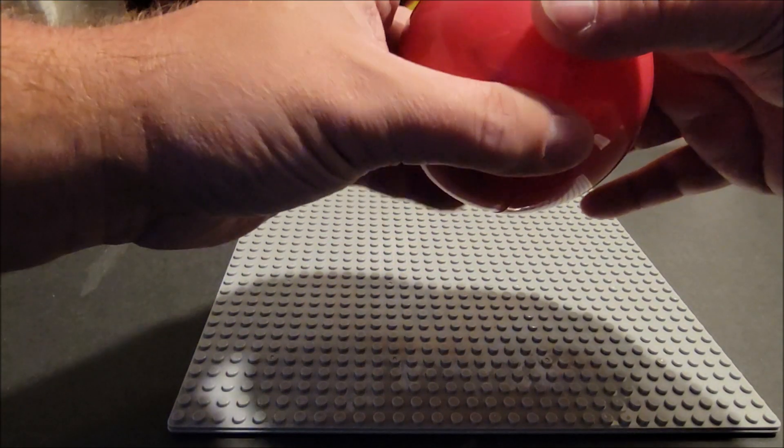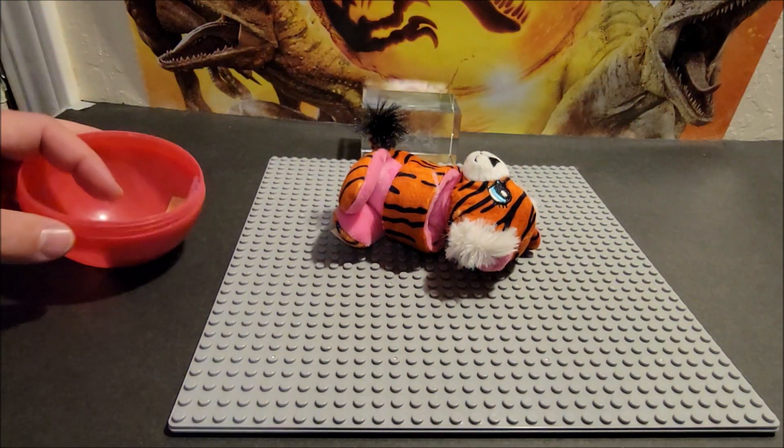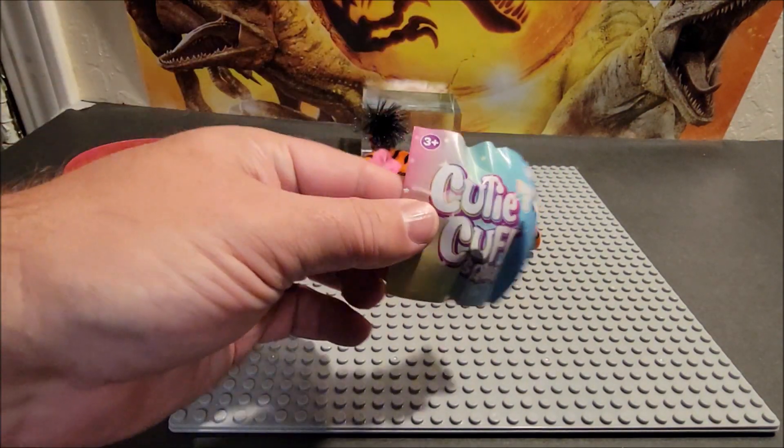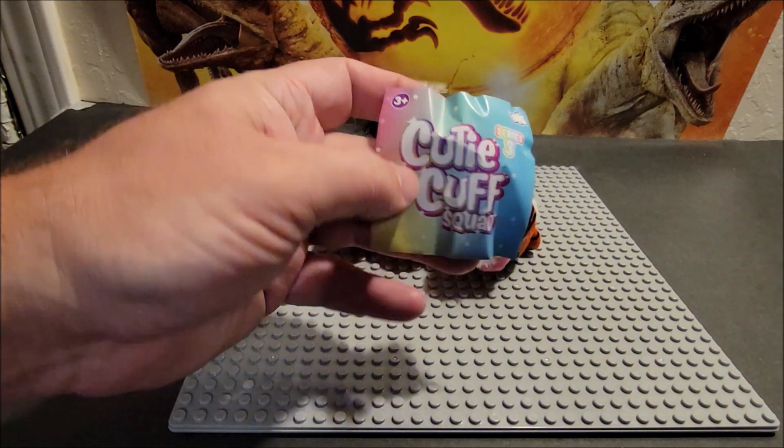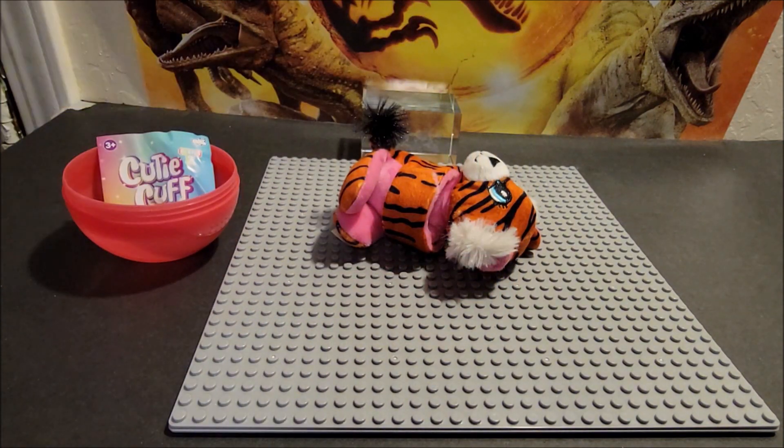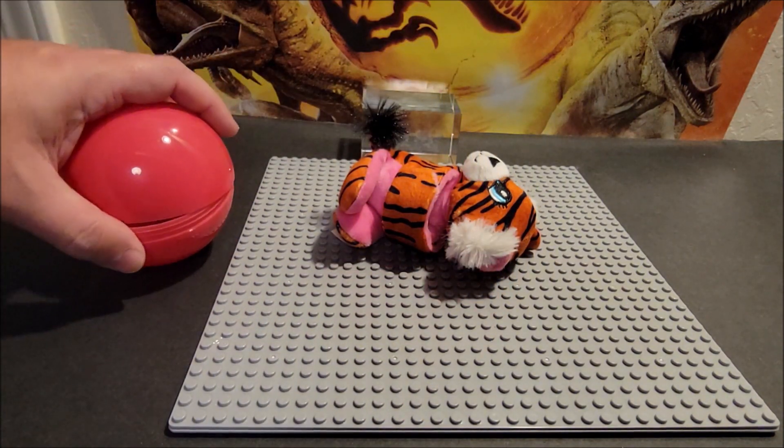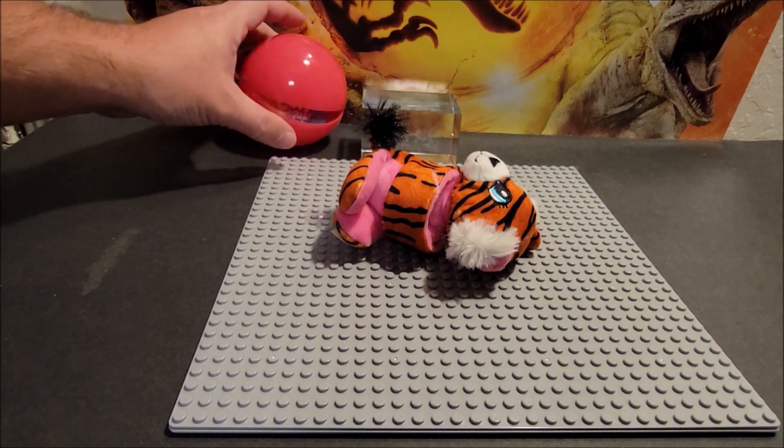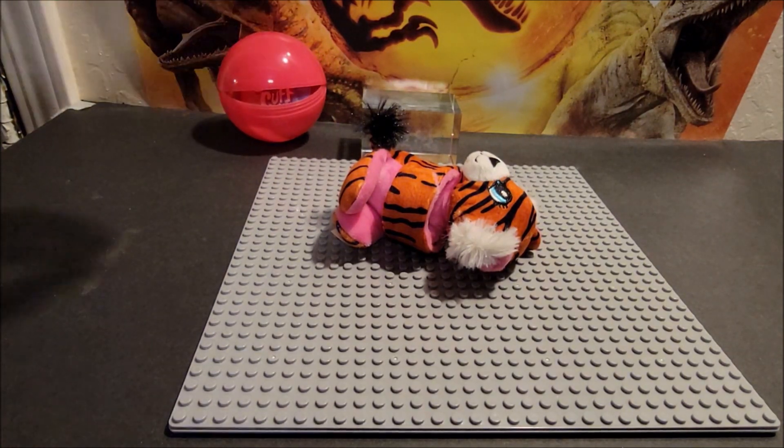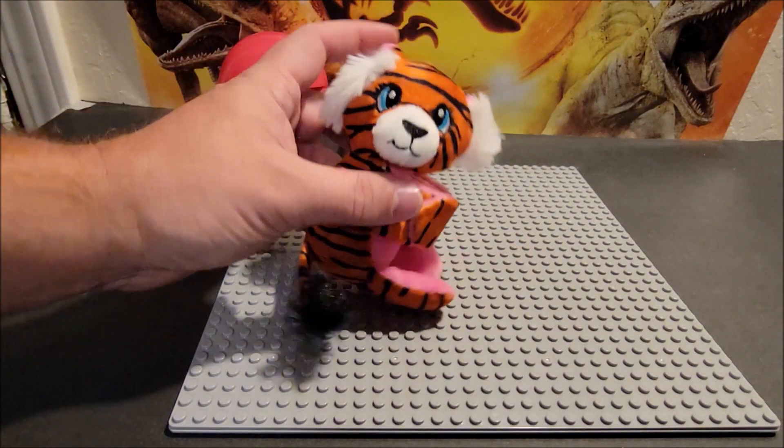So here we go. We're gonna open this up, drop it and see what we get. I don't really usually show it over and over again. I don't like repeating myself. So if you do want to see all the characters inside, go ahead and watch my first video. So we got the tiger.